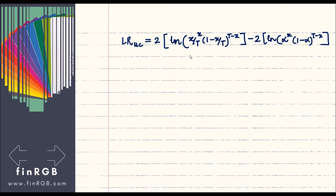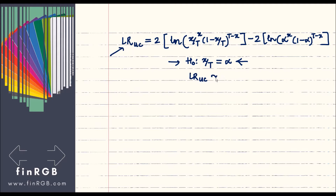The new hypothesis test now looks like this: the null hypothesis is that the failure rate equals alpha. We treat this likelihood ratio LR-UC as our test statistic. The distribution of LR-UC is chi-square distributed with one degree of freedom — we won't go into the derivation, but this is given in textbooks.